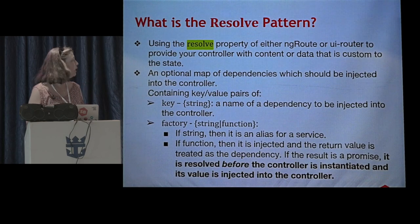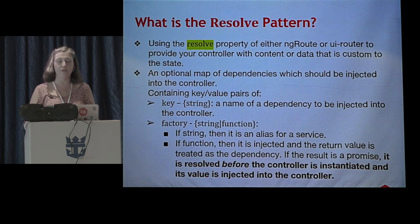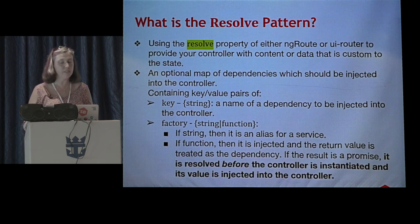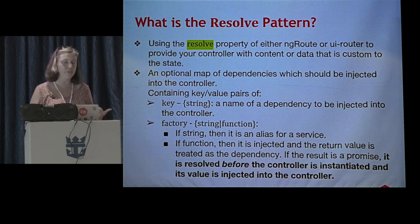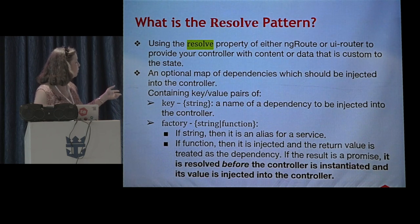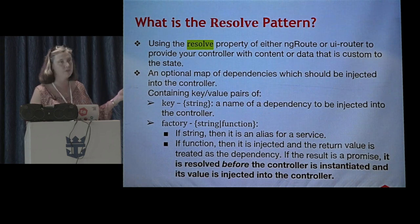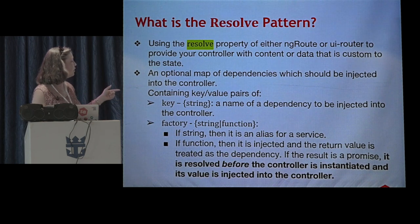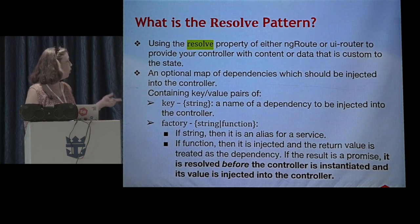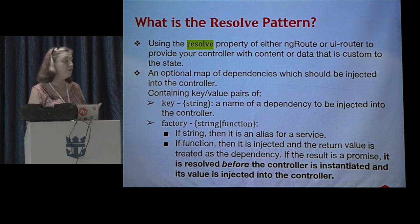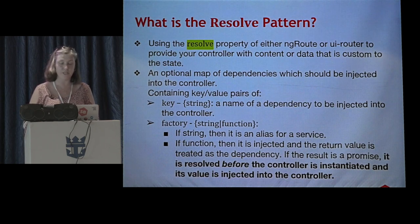Basically, what is it? It's using the resolve property of either your ng-route or UI router to provide the controller with content or data that is custom to the state. It's an optional map of dependencies which should be injected into the controller. It's a key-value pair of a string, which is the name of your dependency, and then a factory. That factory can either be a string that's an alias for a service, or if it's a function it's injected and the return value is treated as a dependency.